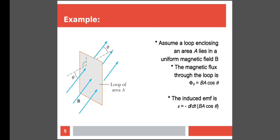Now we can discuss an example. Assume a loop enclosing an area A which lies in a uniform magnetic field B. As you can see from the figure, there is a loop of area A and the magnetic field lines are passing through the loop. The angle theta is made by the magnetic field to the loop. Hence the magnetic flux through the loop is given by phi B is equal to B into A into cos theta. When the magnetic field changes, an EMF is induced, and the EMF is given by epsilon is equal to negative of d by dt of B A cos theta.